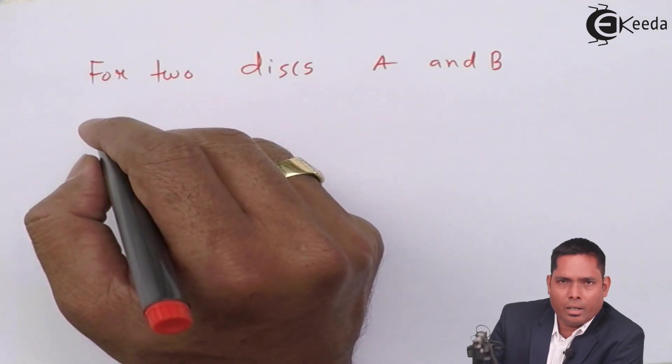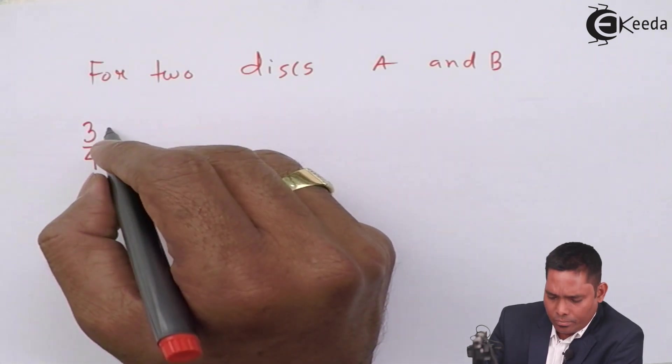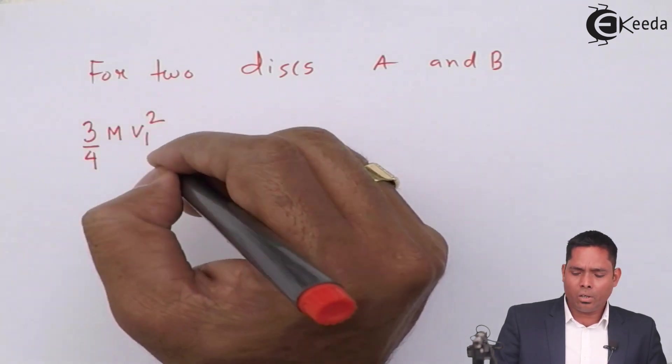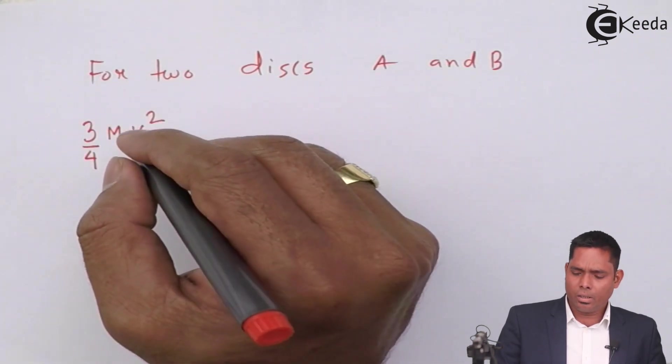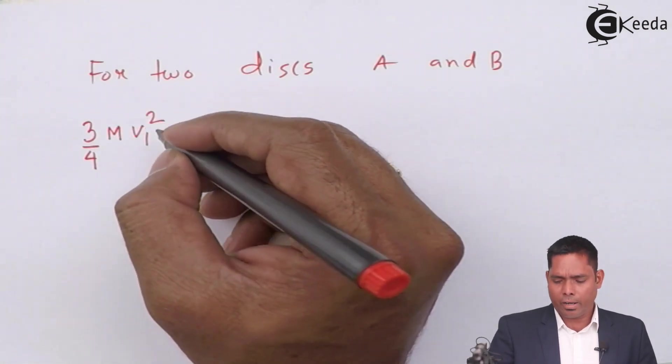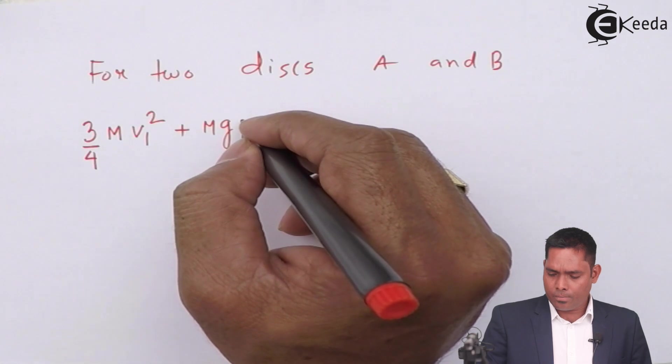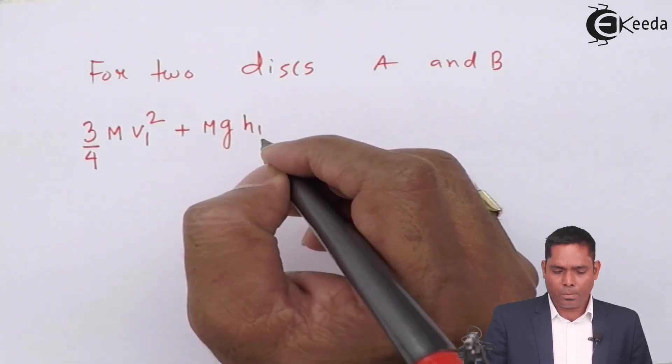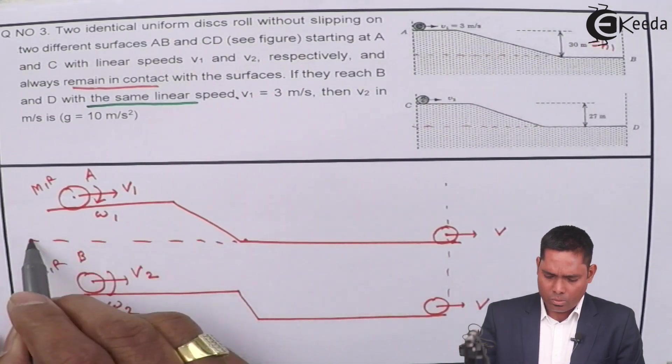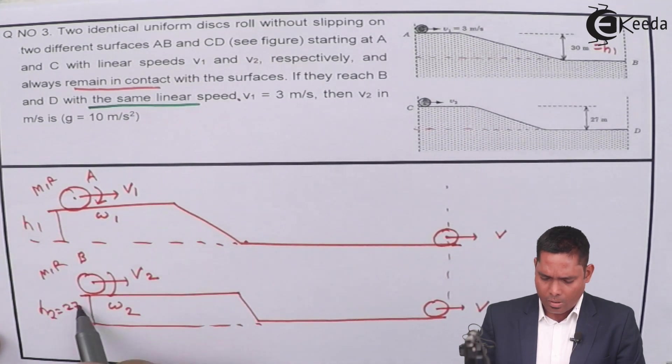The total energy at A will be 3/4 M V1 squared. It is the kinetic energy of rolling. Three fourth of M V1 squared plus it is at a height of 30 meters. So I'll write M G H1. I will first put H1. Suppose this height is H1, which is 30. And this value is H2, which is 27.